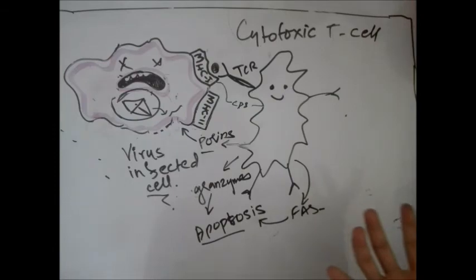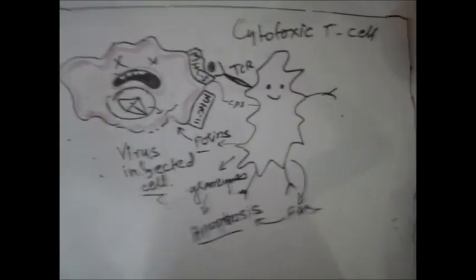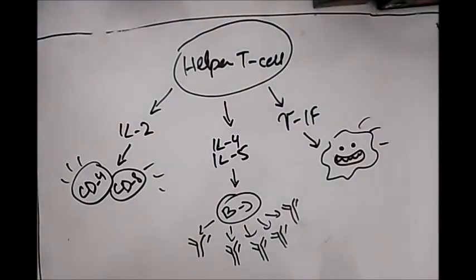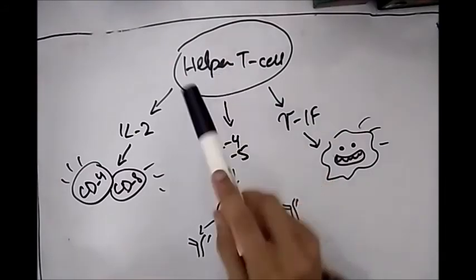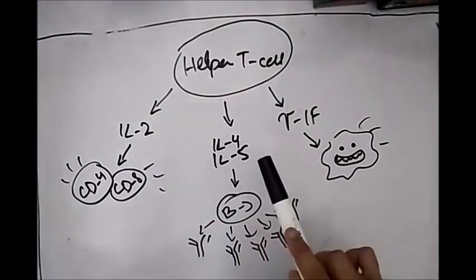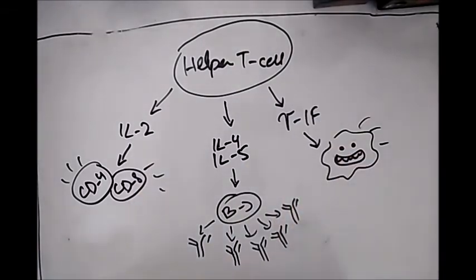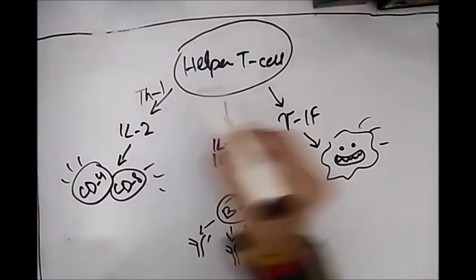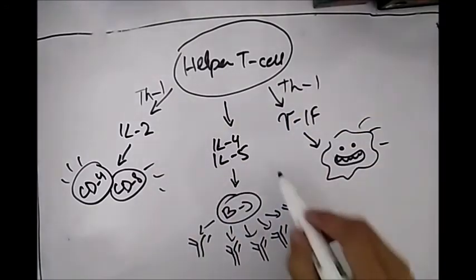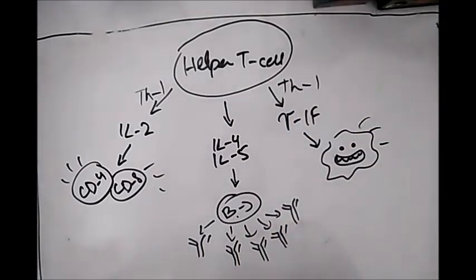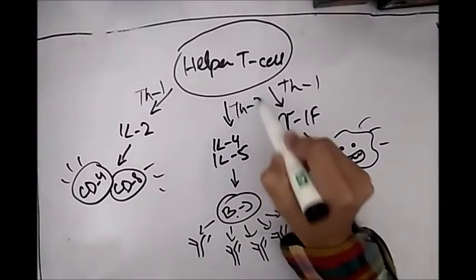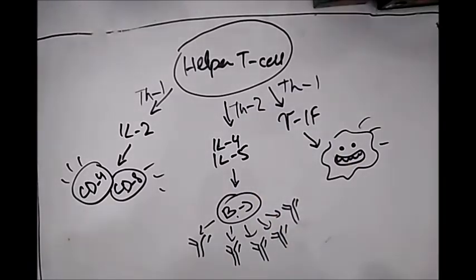Suppressor T-cells suppress immune activity when it is not needed. Three points describe T-cell functions: Th1 cells produce Interleukin-2 and Gamma interferon, while Th2 cells stimulate B cells to produce antibodies.